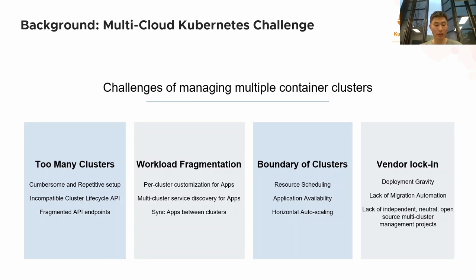But there are still other challenges. First is workload fragmentation. The second is the boundary of clusters — how to do resource scheduling, how to make the application highly available, and how to do auto-scaling. The third one is vendor locking. If we use a commercial project to manage multi-cloud Kubernetes, we may be locked by the SaaS provider.